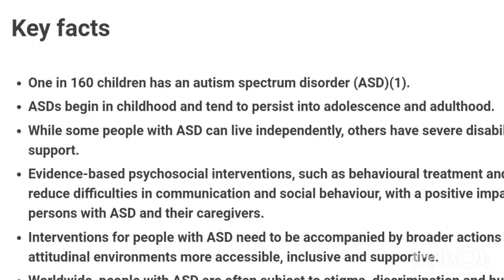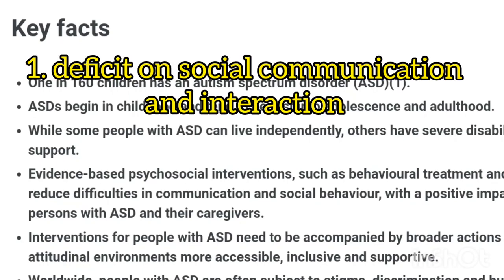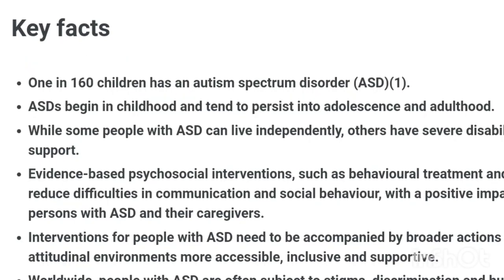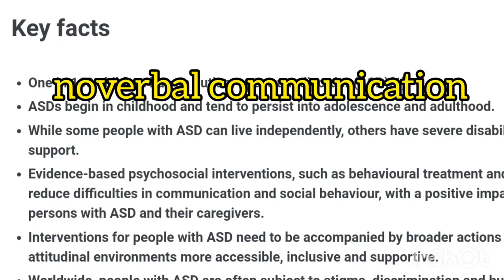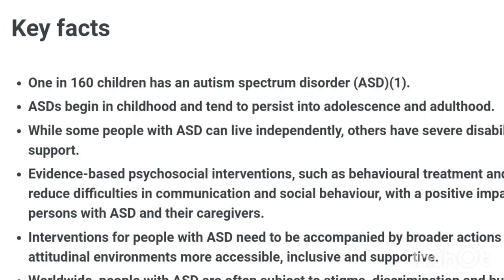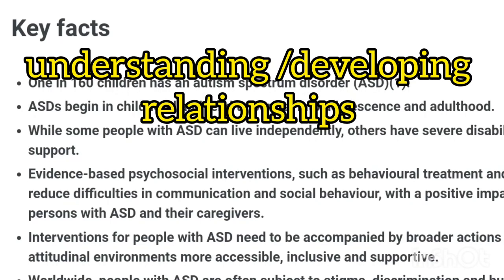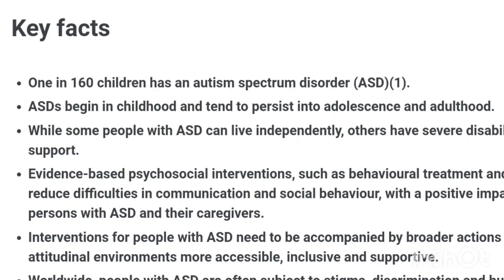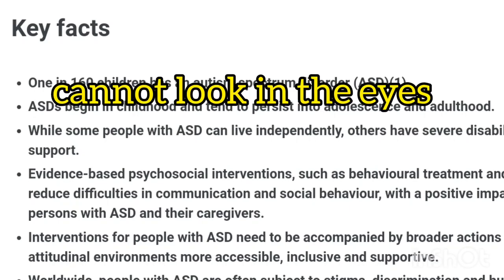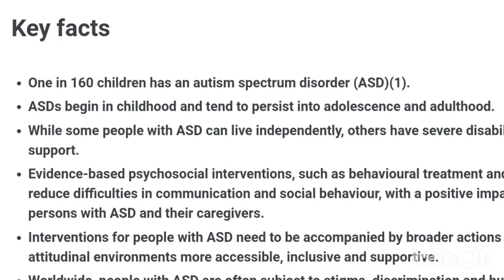Clinically, there are two major characteristics when we discuss ASD. Number one is persistent deficits in social communication and social interaction across multiple contexts. For example, there are problems when it comes to socializing, deficits in nonverbal communication, and deficits in developing, maintaining, and understanding relationships. One of the signs you might notice in children is when a child cannot make eye contact with you.